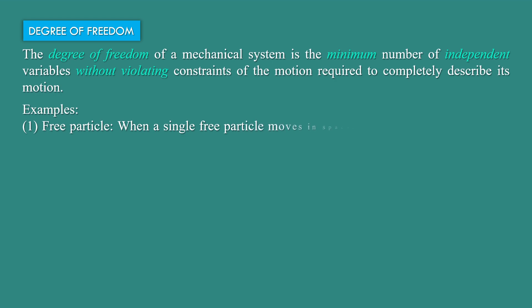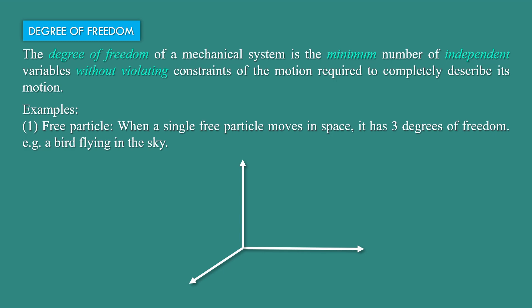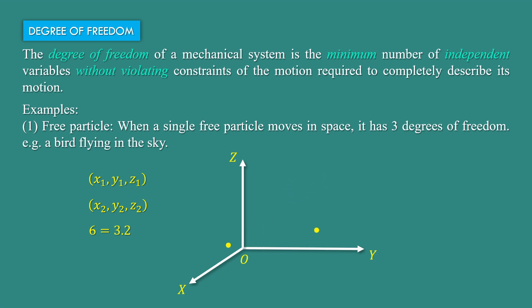Example number one: free particle. When a single free particle moves in a plane, it has three degrees of freedom. For example, a bird flying in the sky, because the bird can move along the X-axis, Y-axis, as well as the Z-axis. Now if we consider two birds, then we must have two coordinates, given by (X1, Y1, Z1) and (X2, Y2, Z2). Then the degree of freedom of two points will be six.